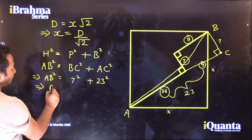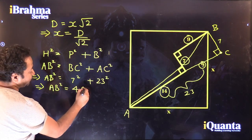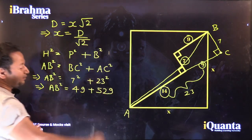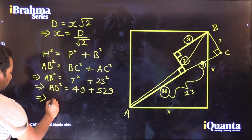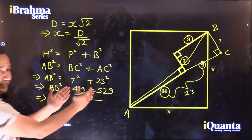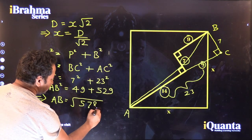Calculating it further, square of 7 is 49 and square of 23 is 529. Which means AB will be square root of 49 plus 529. That is equal to 578.